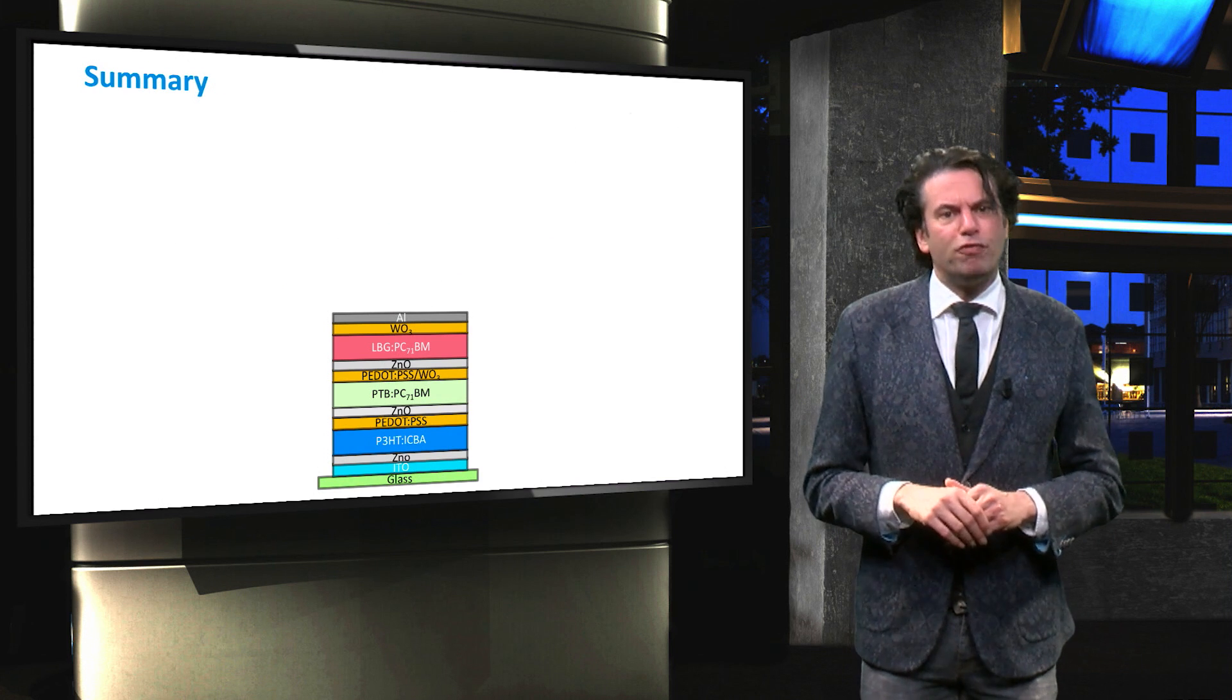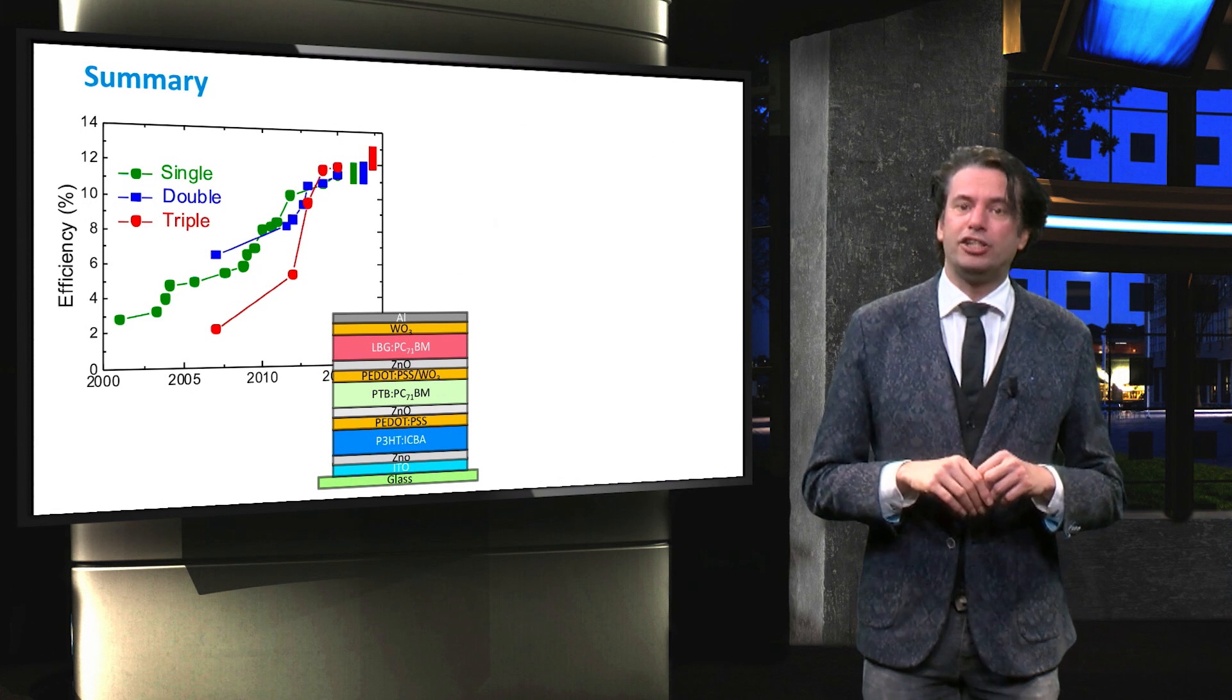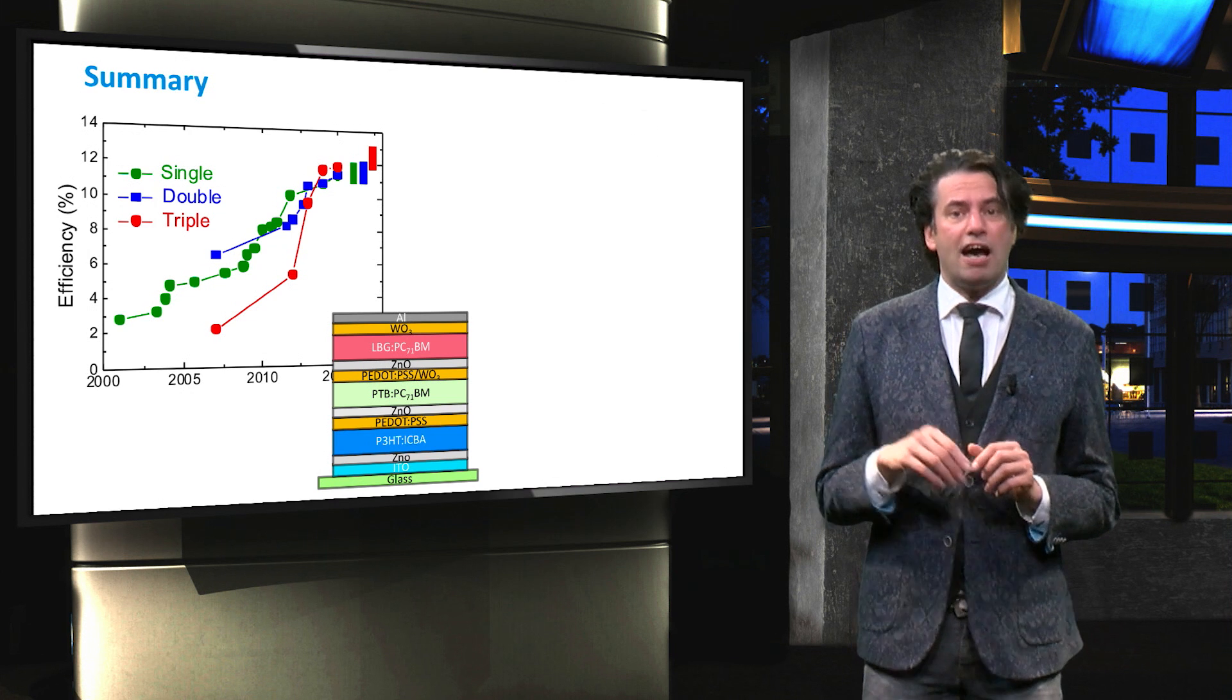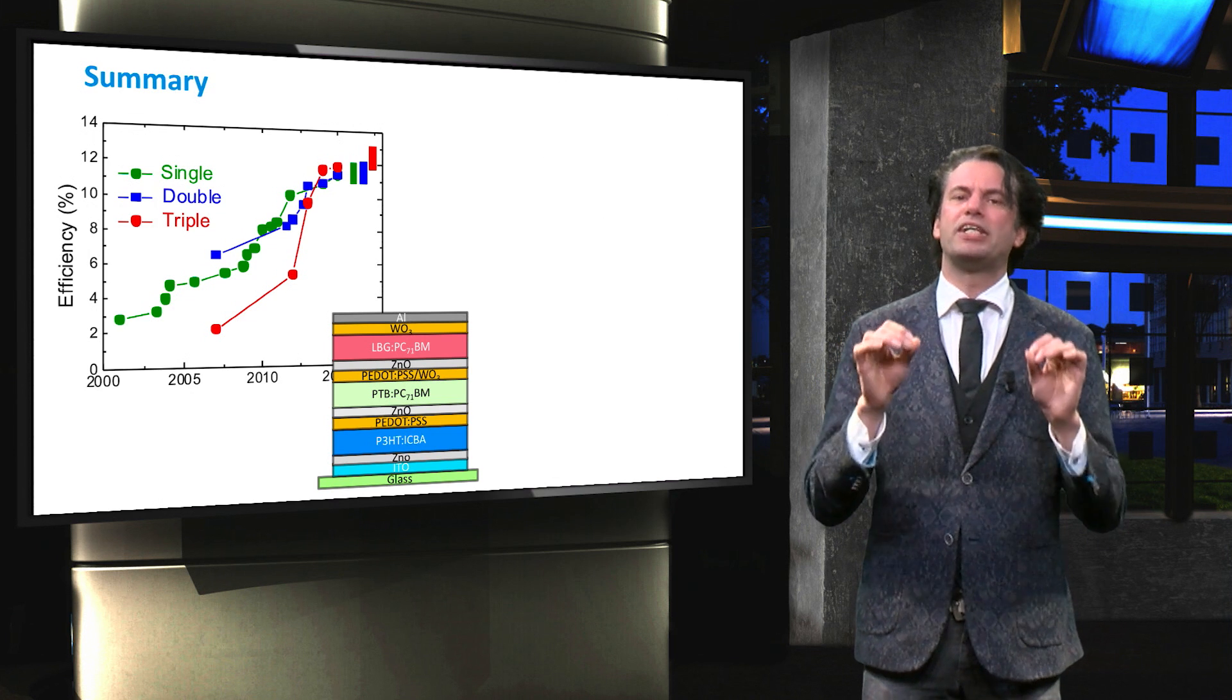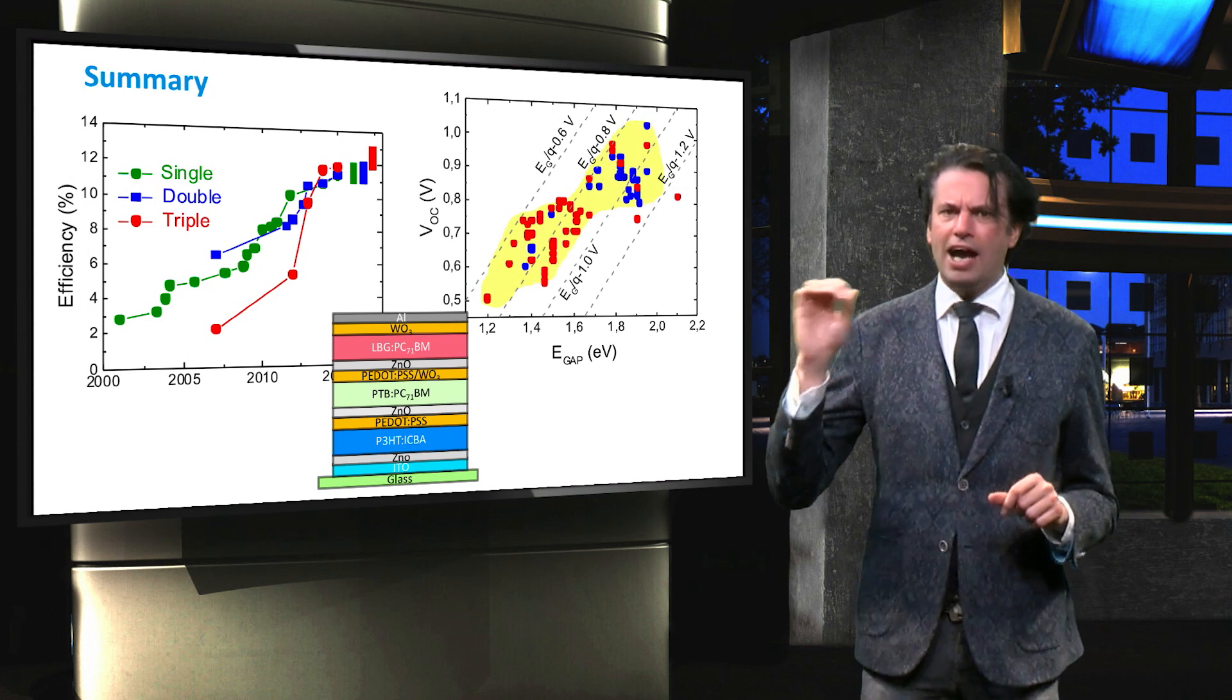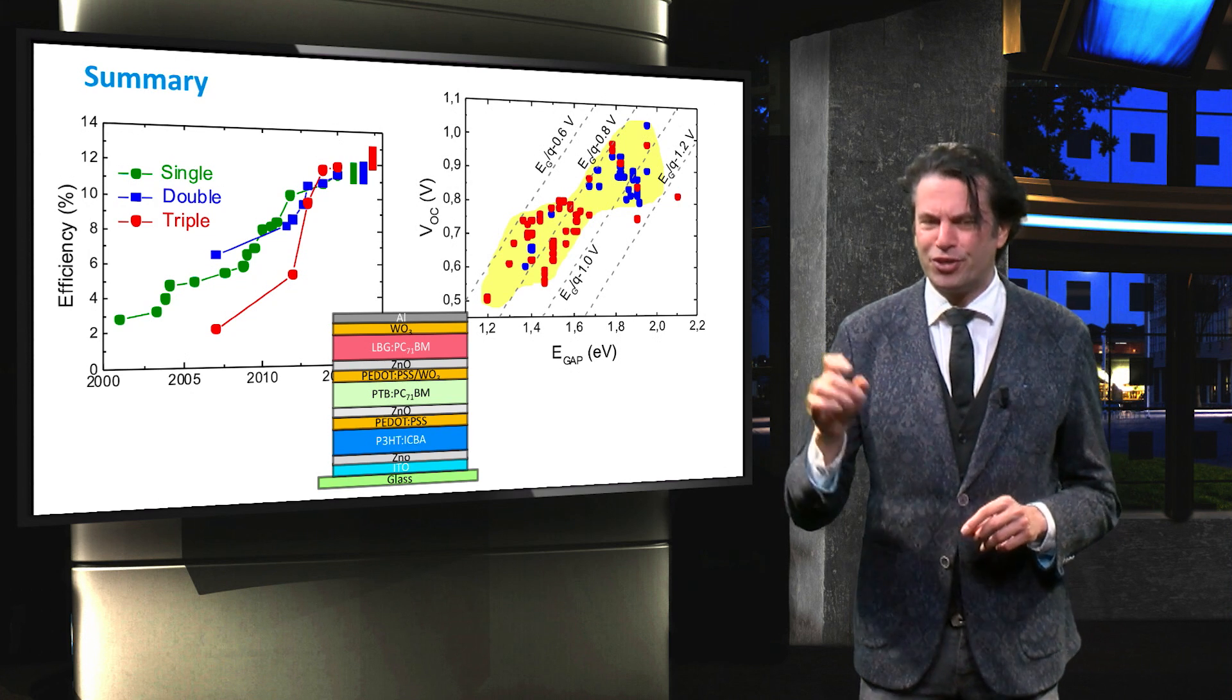In summary, the development of the multi-junction organic PV devices is still in progress. State-of-the-art efficiency achieved for single junctions are up to 12.1% have been reported and for triple junctions up to 13.2%. The triple junction is still a moderate improvement in reference to the single junction. Higher efficiency can be expected if the band gap energy utilization of high band gap materials are further improved.